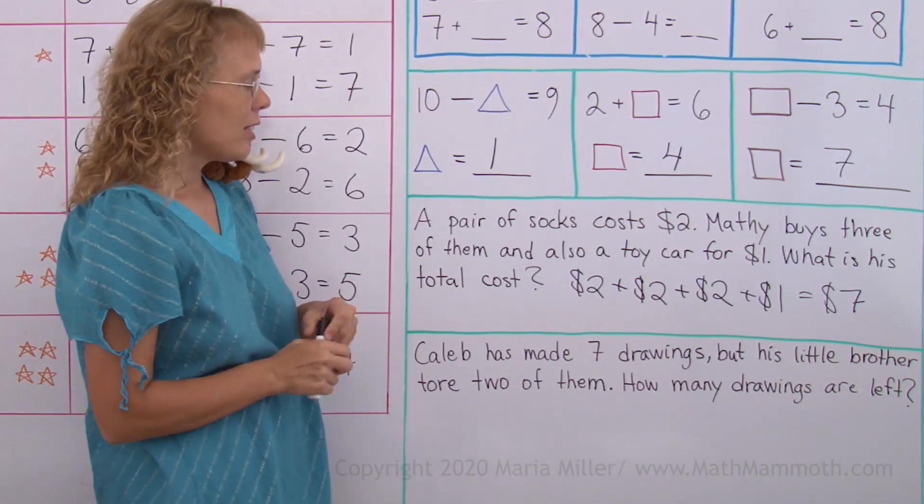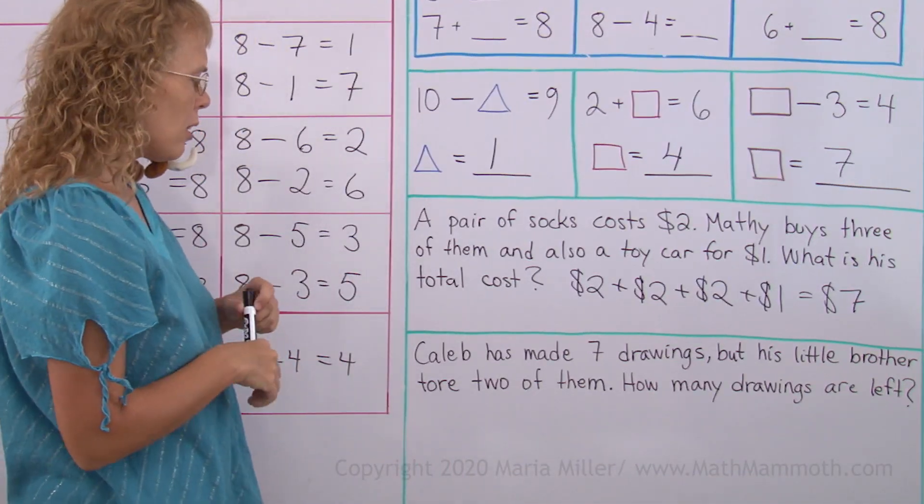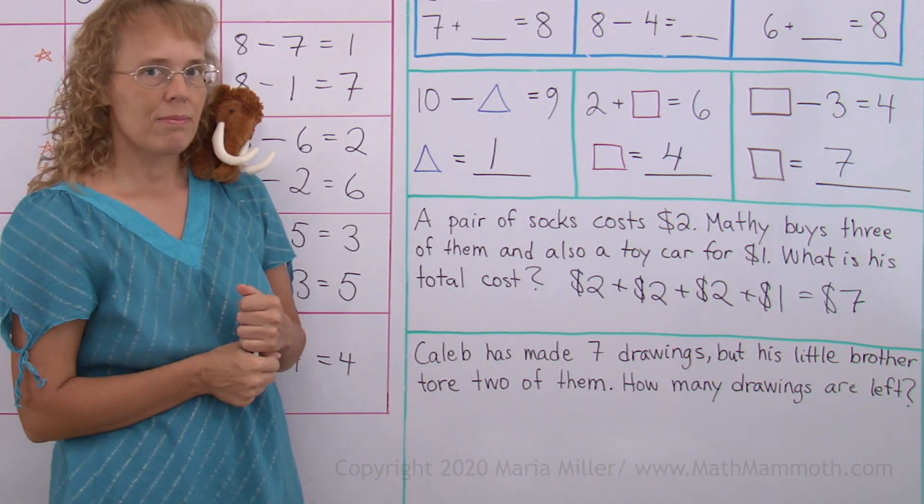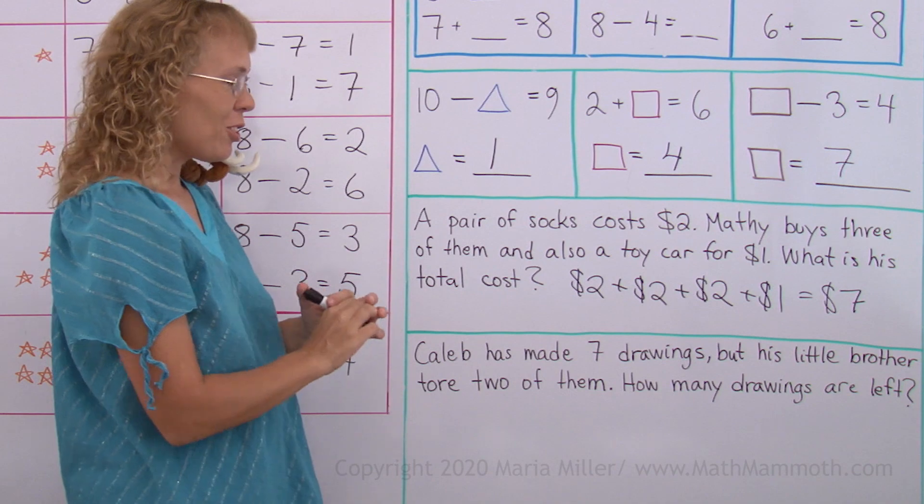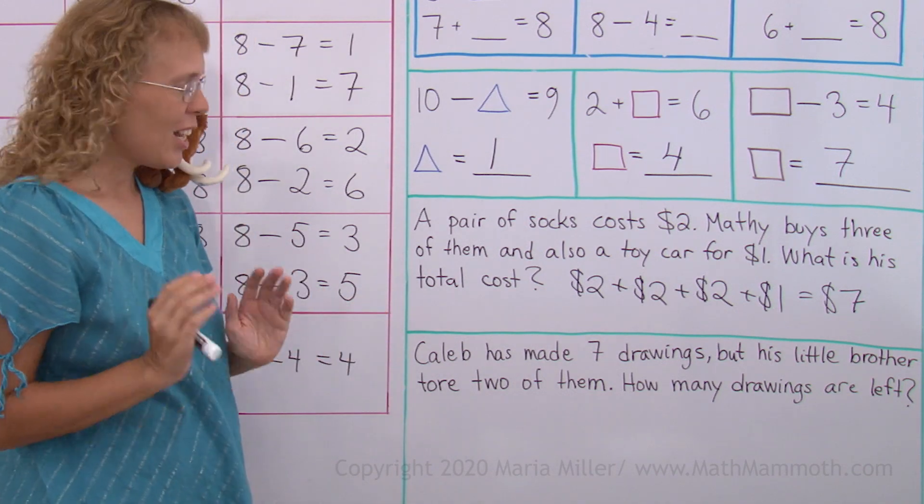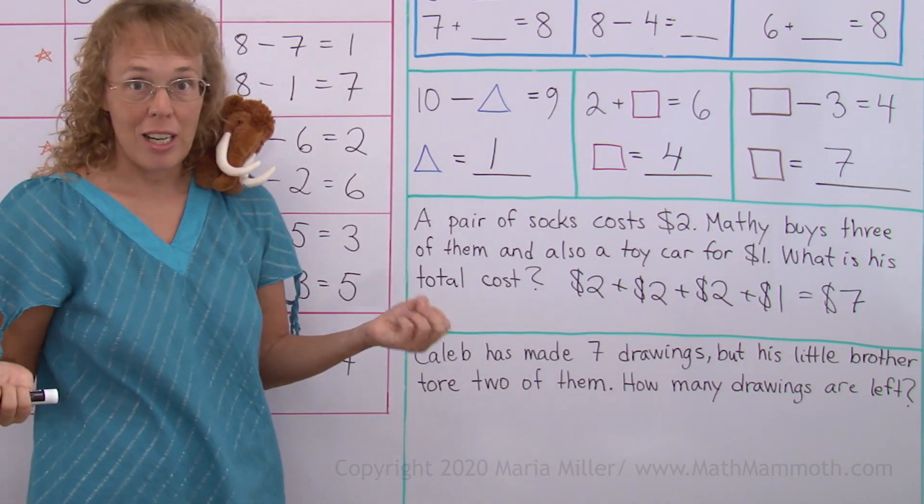Caleb has made 7 good drawings, but his little brother tore 2 of them. Has that ever happened to you? How many drawings are left? Now what shall we do? Add or subtract? Or both?